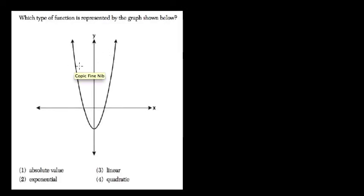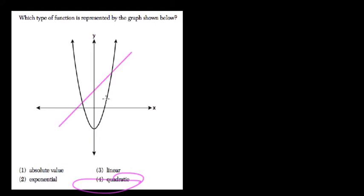They want to know what type of function is represented by this graph. This is a quadratic graph. If you wanted a linear graph, that would be a straight line somewhere.